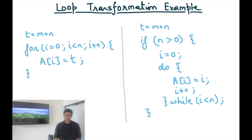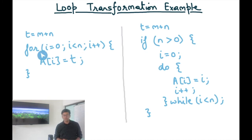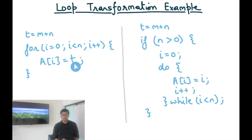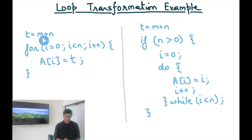Let's look at an example of a loop transformation. There is a computation t equals m plus n, and then a simple for loop: for i equals 0 to n, i++, a[i] equals t. This program already has loop invariant code motion implemented — there is no redundancy or partial redundancy, because the computation for t has already been moved out of the loop.